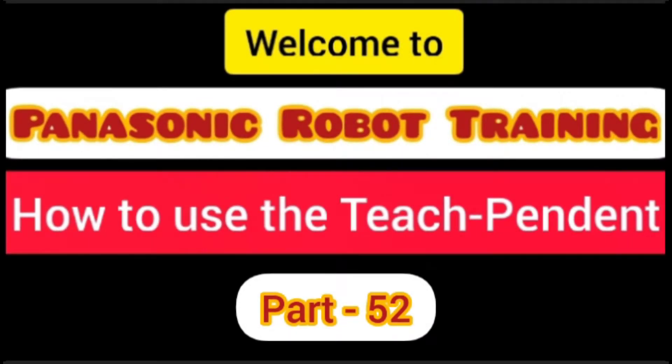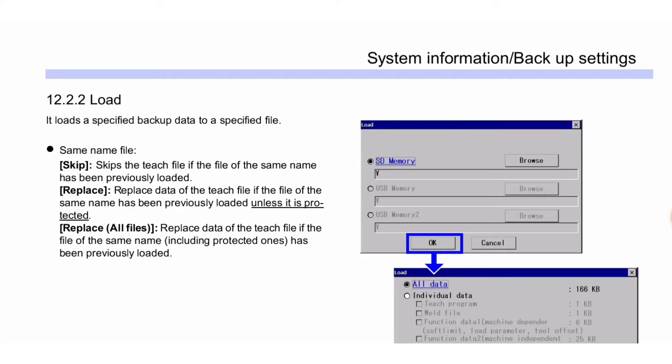Welcome friends to our Panasonic robot training on how to use the teach pendant. This is Part 52. Here we discuss the Load function — it loads specified backup data to a specified file. Same name file skip skips the teach file if the file of the same name has been previously loaded. Replace replaces data of the teach file if the file of the same name has been previously loaded, unless it is protected.